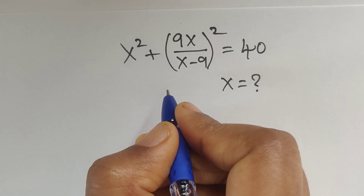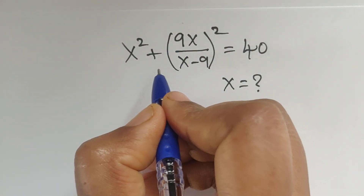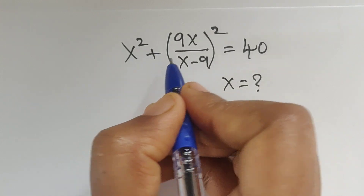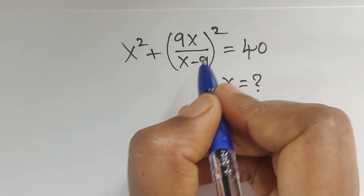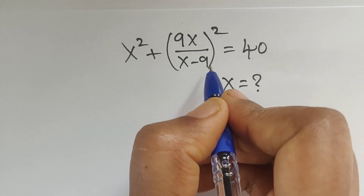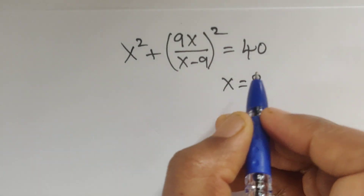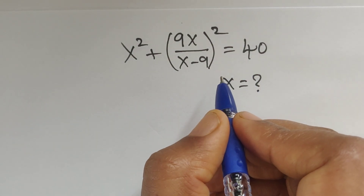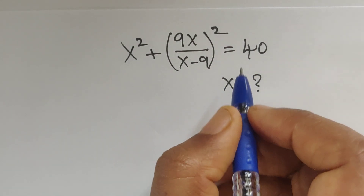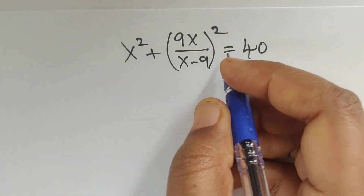Hello everyone, welcome back to our channel. Here we have one question: x squared plus 9x divided by x minus 9, whole to the power of 2, equal to 40. In this problem we have to find the value of x. Let's see how we solve this problem.